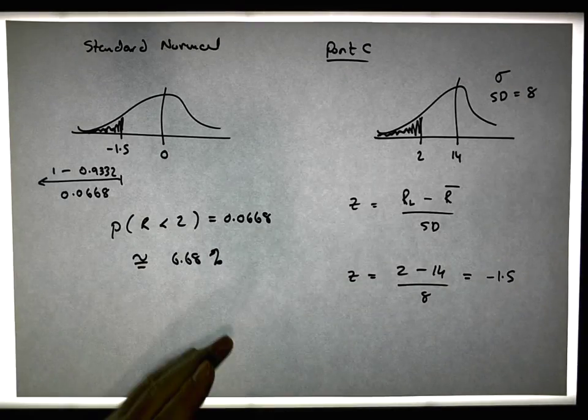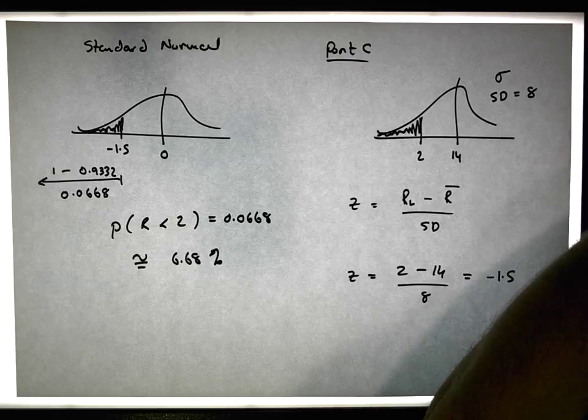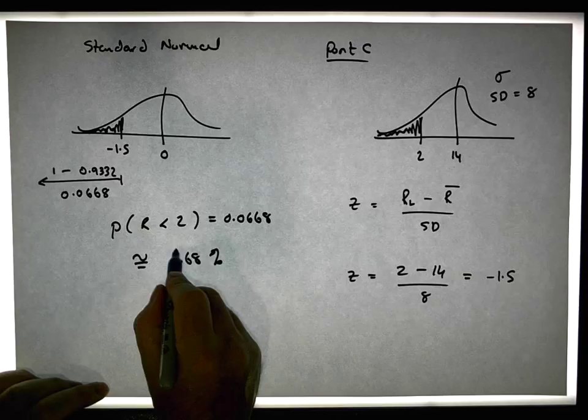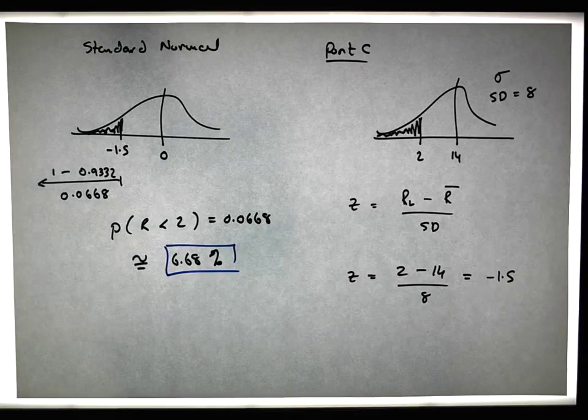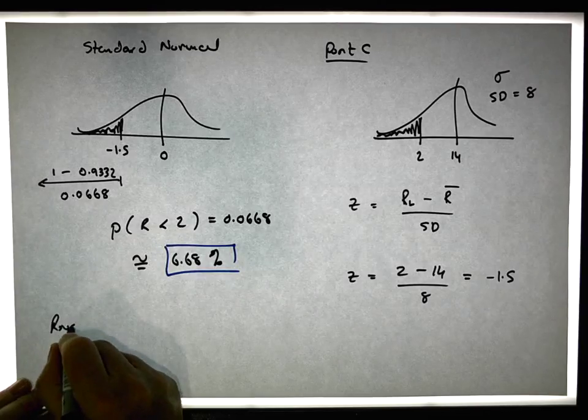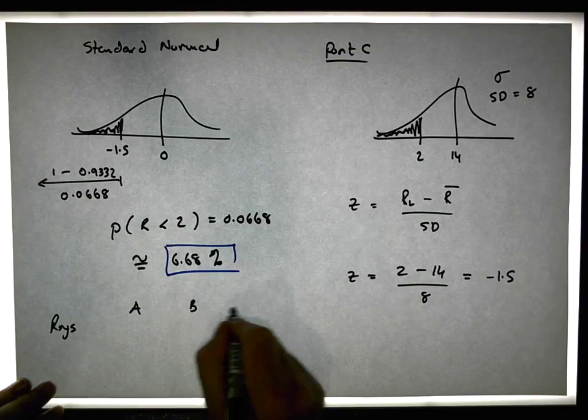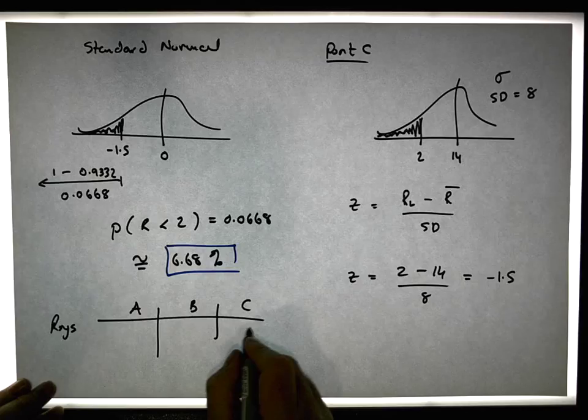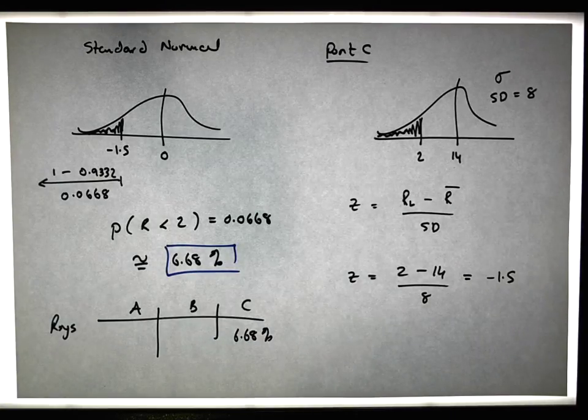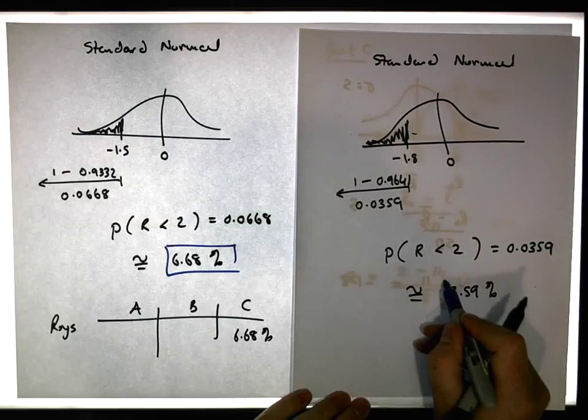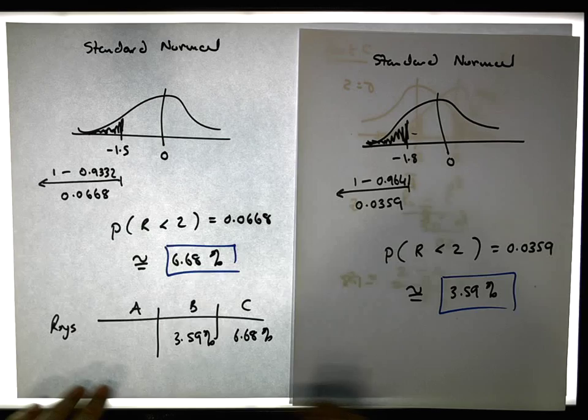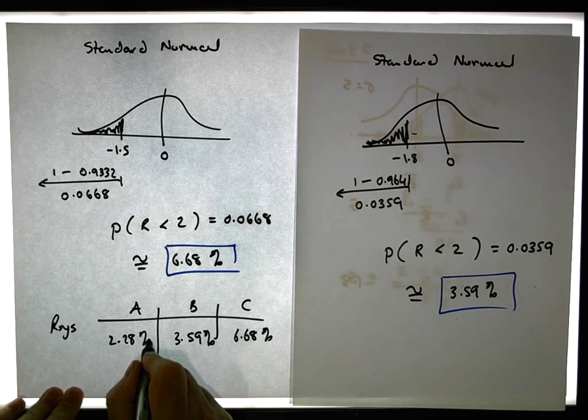...is equal to 0.0668, or approximately 6.68%. So it'll fall below 2% 6.68% of the time. Now what Roy's criterion says to us: Roy's criterion based on portfolios A, B, and C. For C it's 6.68%, for B it's 3.59%, and for A it's 2.28%.